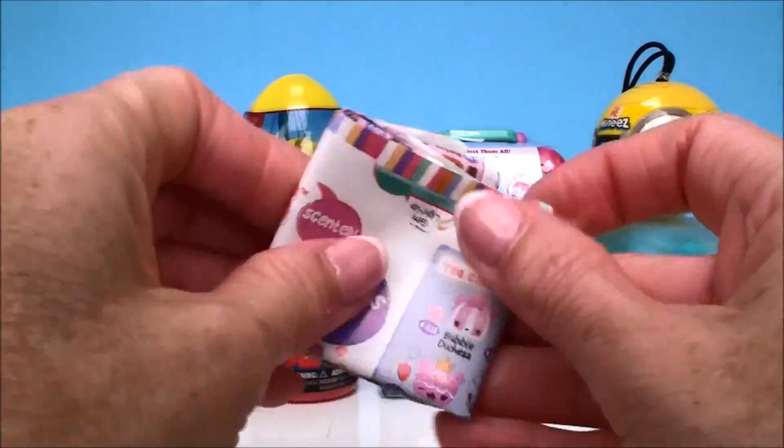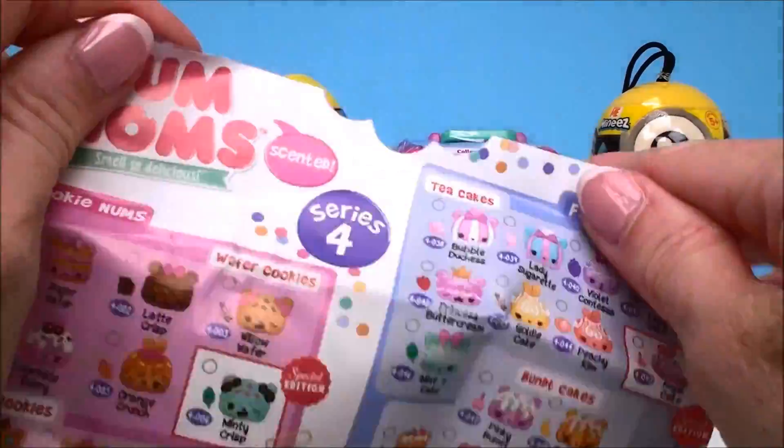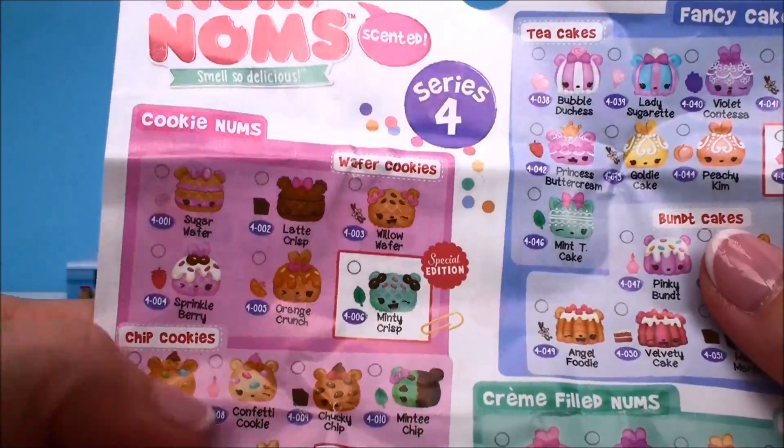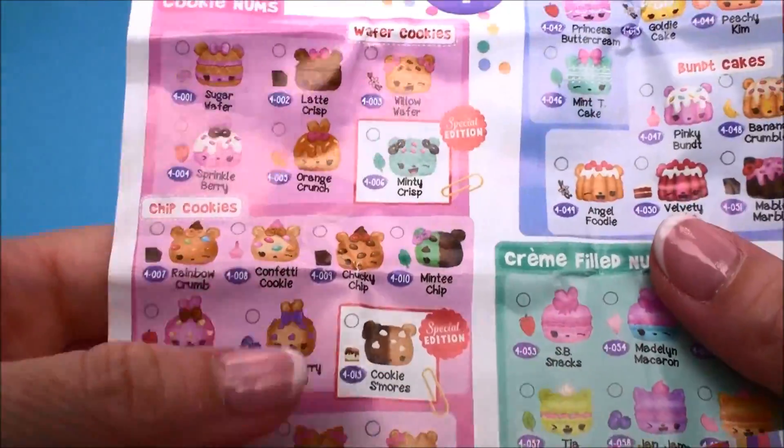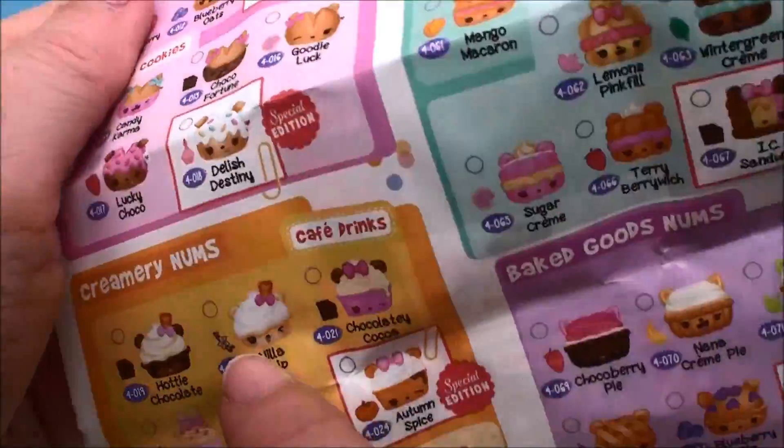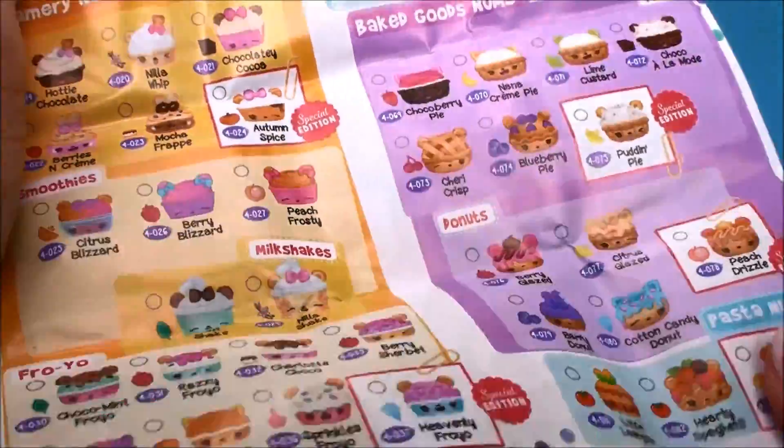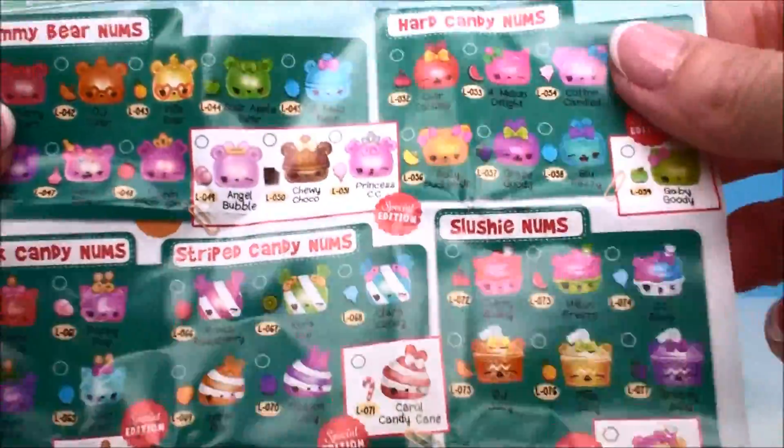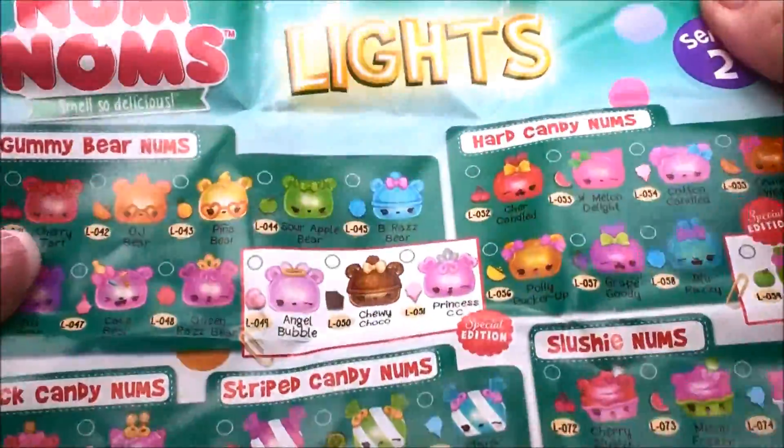So real quick I'll show you the new collector's guide. Lots of different categories. There's cookie noms, chip cookies and fortune cookies. They have cream filled noms, really cute. Creamery, baked goods, there's all different ones. Froyo, super cute. There's doughnuts and on the back it shows all of the different lights.